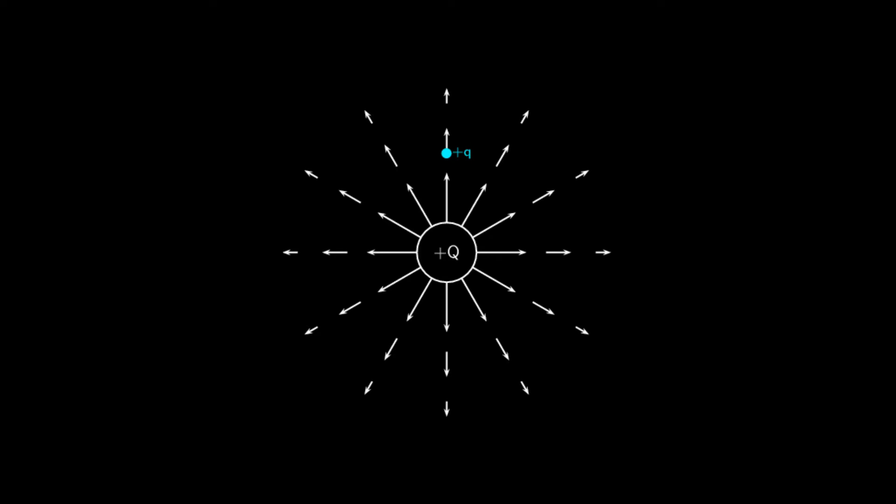So if the central charge is positive, like in our example here, the direction of the electric field is outward because the positive source charge repels the positive test charge, pretty much like pushing it out. Now if the central charge is negative, well then the direction of the field is inward because the negative source charge is attracting or pulling in the positive test charge.